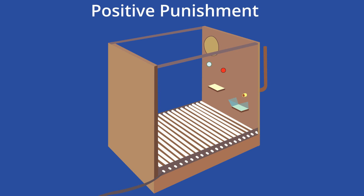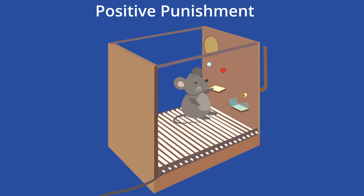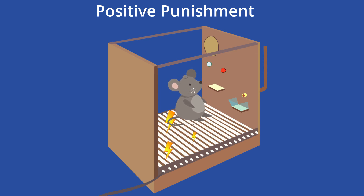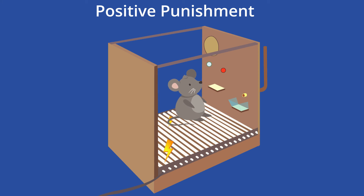Skinner also conducted experiments in which he introduced punishments to the animals. When using positive punishment — which involves giving something unpleasant to discourage a certain behavior — Skinner would rig the levers and buttons to set off an electric shock whenever the animal pushed them, so that the animal would eventually avoid touching the levers and buttons at all costs.